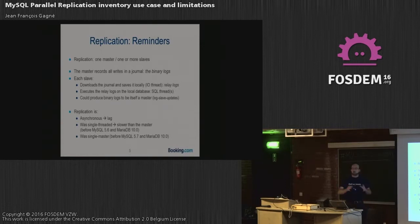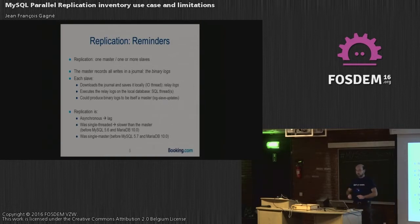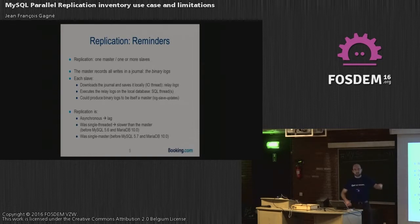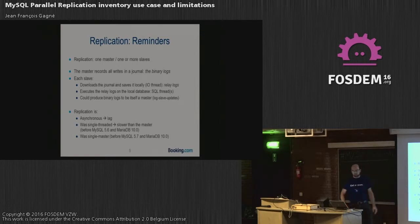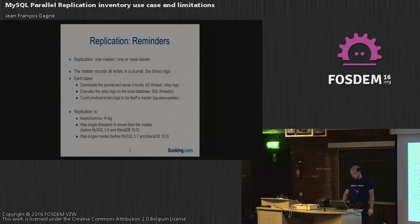Replication — a quick summary, because it was already discussed today by Rene. One master, many slaves. The master has the binary log, the journal of all transactions. The slave downloads the binary log, stores it in the relay log — that's the job of the I/O thread. The SQL thread applies the binary log to the local database. A slave can also produce its own binary log to act as a master itself. Replication is asynchronous, so we might have lag. It was single-threaded, now it can be multi-threaded. It was single-mastered, now it can be multi-source in MySQL 5.7 and MariaDB 10.